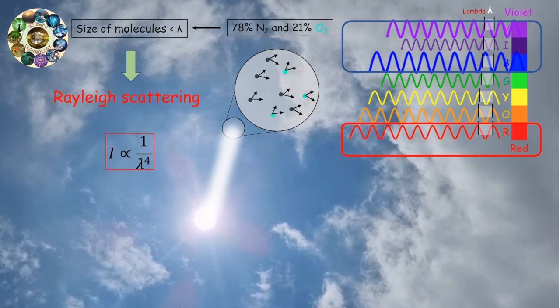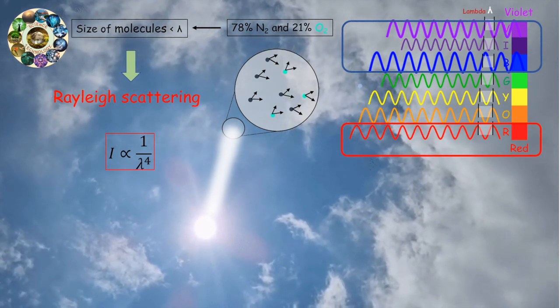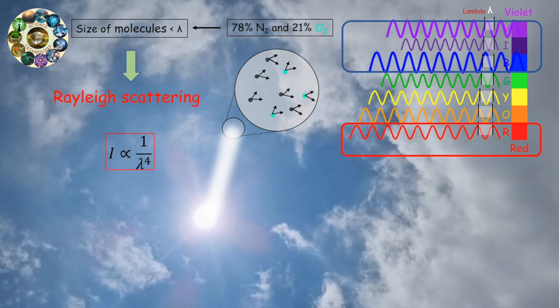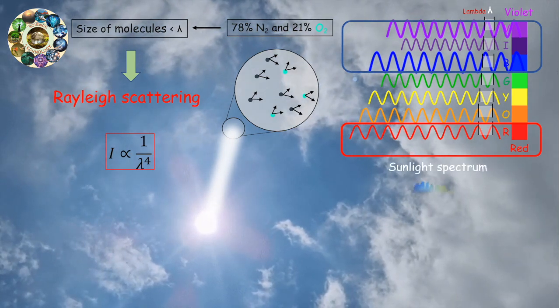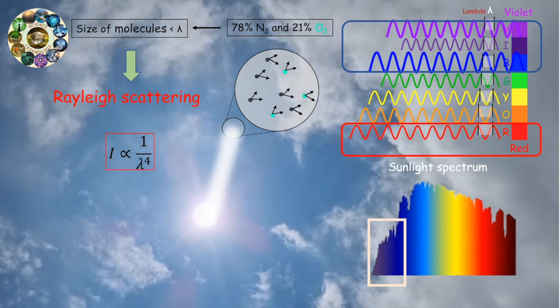You might wonder why the sky doesn't actually look purple, since the violet light is scattered even more strongly than blue. This is because there isn't as much violet in the sunlight spectrum to start with, and our eyes are much more sensitive to blue.